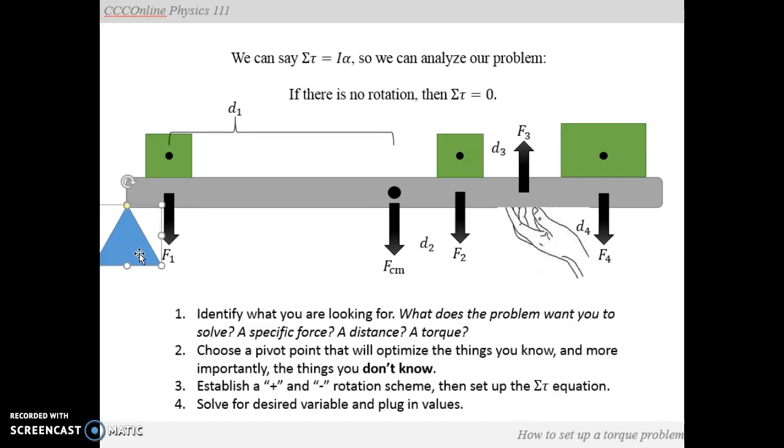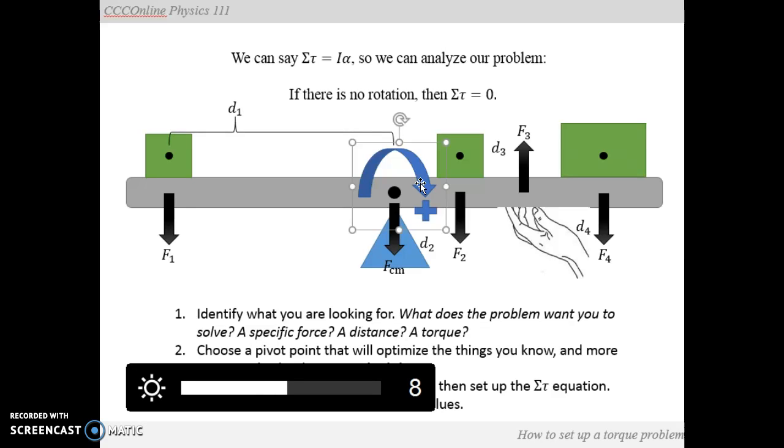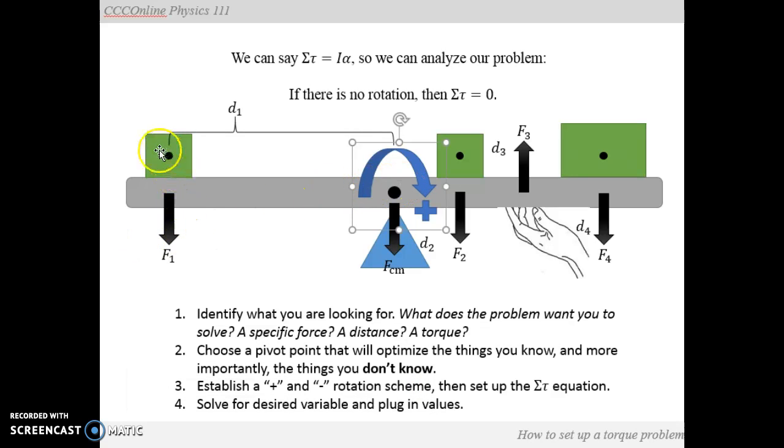Once we've established a pivot or once we know where our pivot is, then establish a positive and minus rotation scheme, and then you can set up your sum of the torque equation. For example, if our pivot here is in the middle, typically we say that the rotation in the clockwise direction is positive. So here's a little symbol for that. So any force that makes the rod move in that direction, we consider positive. Anything that makes it move in the other direction, we consider it negative.